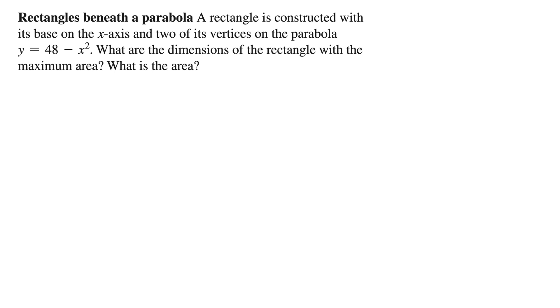Rectangles beneath a parabola. Let's see if we can try to figure out what's going on with this optimization problem here. It says a rectangle is constructed with its base on the x-axis and two of its vertices on the parabola y equals 48 minus x squared. What are the dimensions of the rectangle with the maximum area and what is the area?